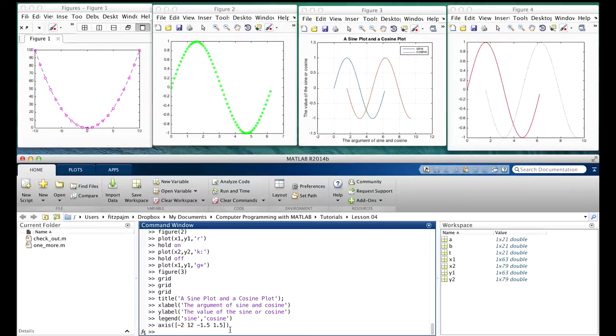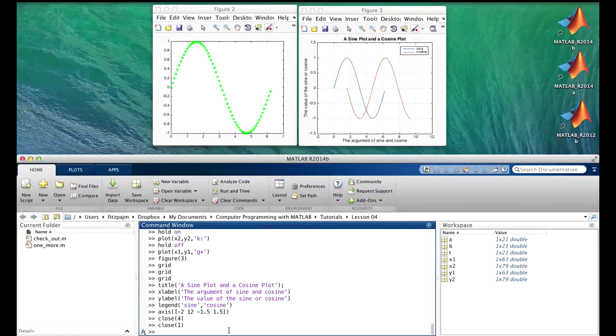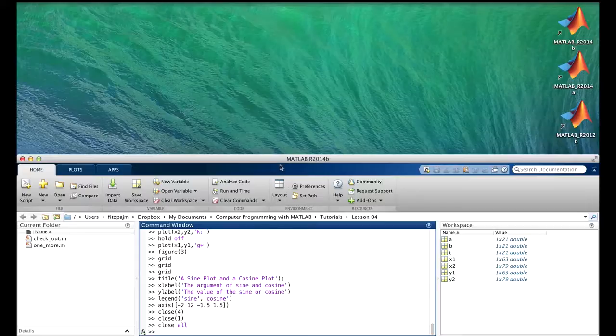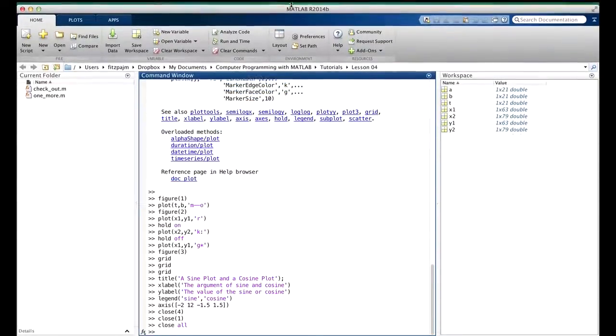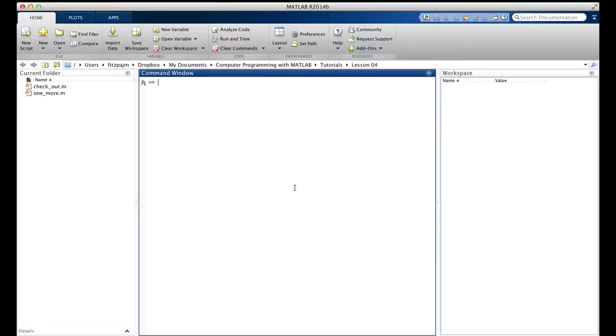As always, you can get more information about this function or any function with either the help command or the dot command. Okay, that's it for our second installment on plotting, except for closing the figures. You can do that with the function close, either one at a time like this. Figures four and one are gone. You can't get them back except by repeating the commands that did the plotting and the decorating. And you can close all the open figures at once with the close all command, like this. Now that I've got all this room, I think I'll stretch the desktop back to full size. And I think I'll clear everything. There, all done with plotting.